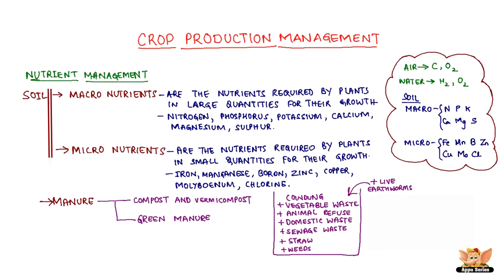The second type is green manure, which is obtained by mulching — that is, covering the soil with grown plants like sunhemp and plowing them into the soil. These green plants turn into green manure.